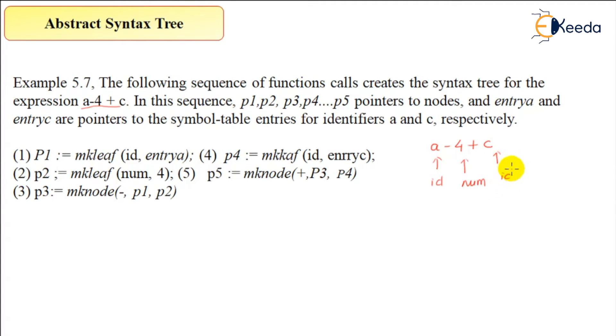In this sequence, p1, p2, p3, p4, and p5 are pointers to nodes, and entry_a and entry_c are pointers to the symbol table entries for identifiers a and c respectively.